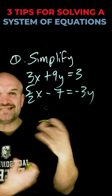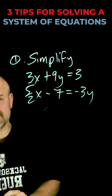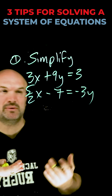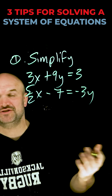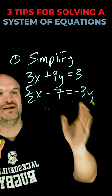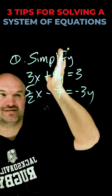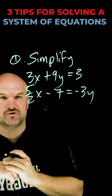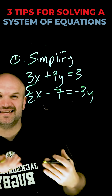My last tip is to go ahead and simplify. When you're solving a system of equations, especially using elimination, you want to make sure that your variables align — x's over x's, y's over y's, and constants over constants.